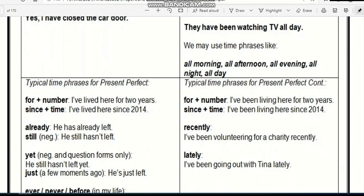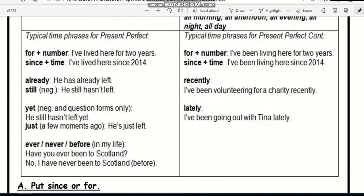So typical time phrases for present perfect can be for plus number. For example, I have lived here for two years. Since plus time, for example, I have lived here since 2014. Then already, for example, he has already left. Still, we use it in negative: he still hasn't left. Then yet, in negative and question forms only. For example, he still hasn't left yet. Then just, it means a few moments ago. For example, he has just left.